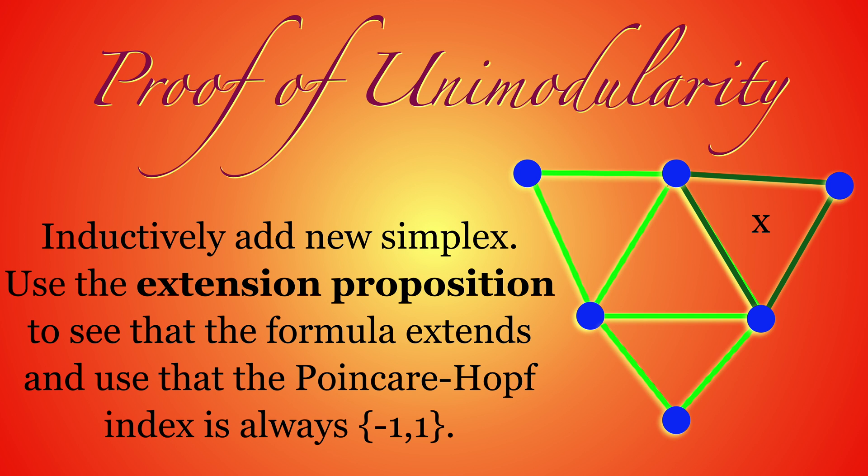The proof of the unimodularity theorem is done inductively by building up the structure as a CW complex, adding more and more cells. In the case when the cell has a sphere as a boundary, then the Fredholm characteristic either stays or changes sign. The constant which determines that multiplication factor is a Poincaré-Hopf index.